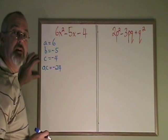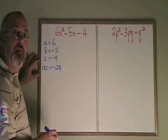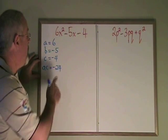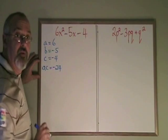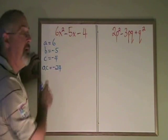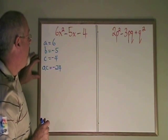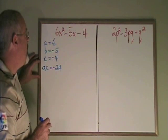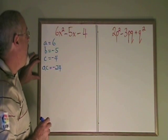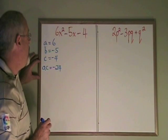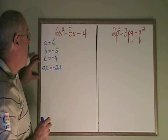The question we ask is a little bit different. Now we are saying, what two numbers multiply to give ac negative 24 and add to give b negative 5? The two numbers that multiply to give negative 24 and add to give negative 5 are negative 8 and positive 3.